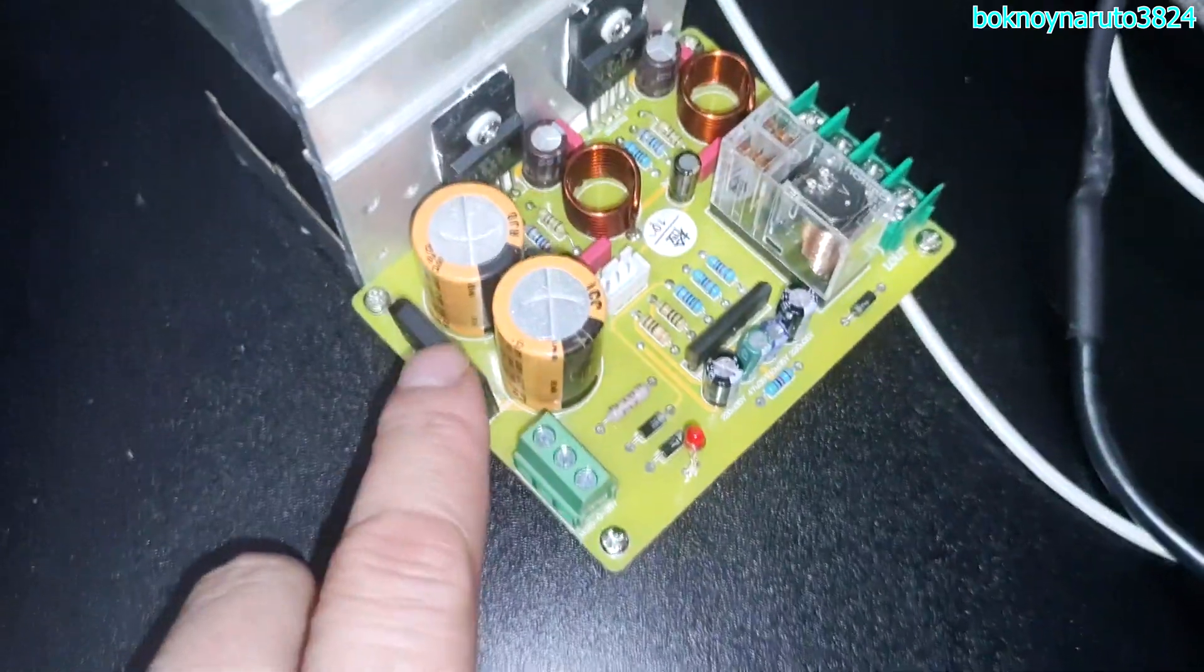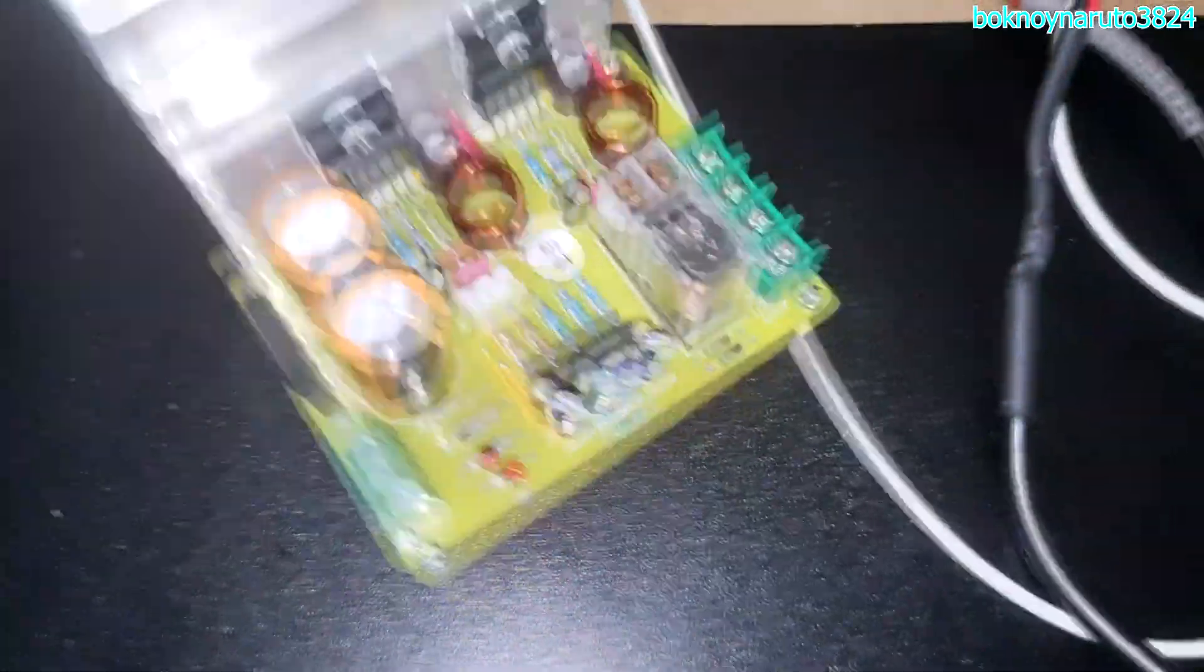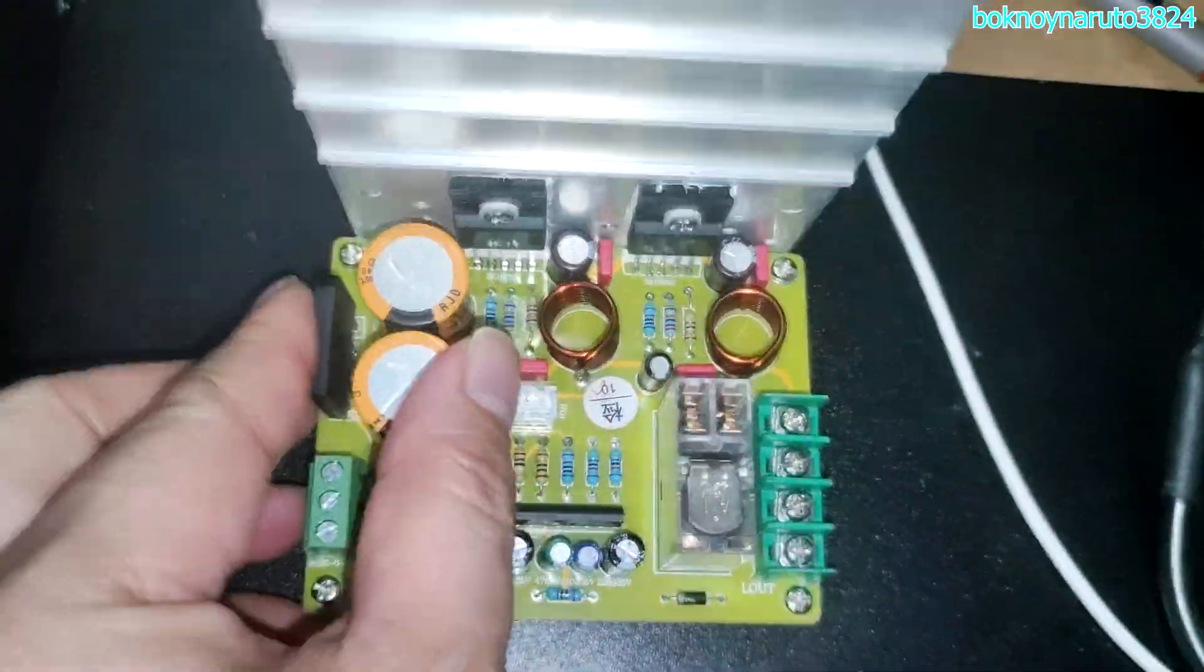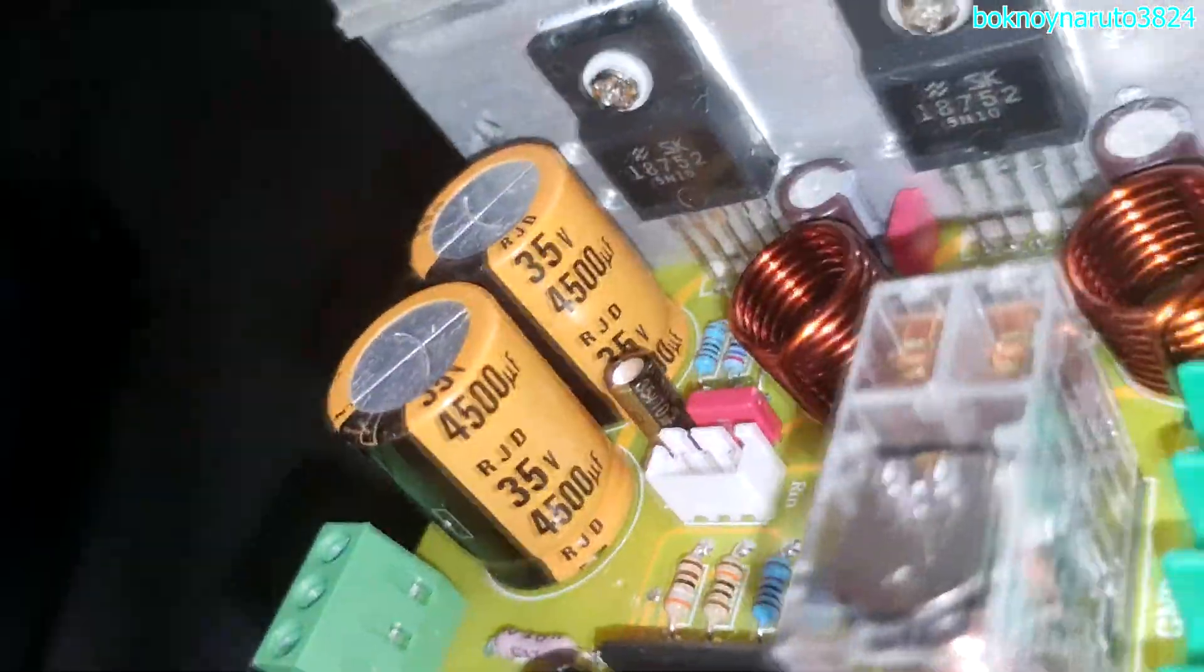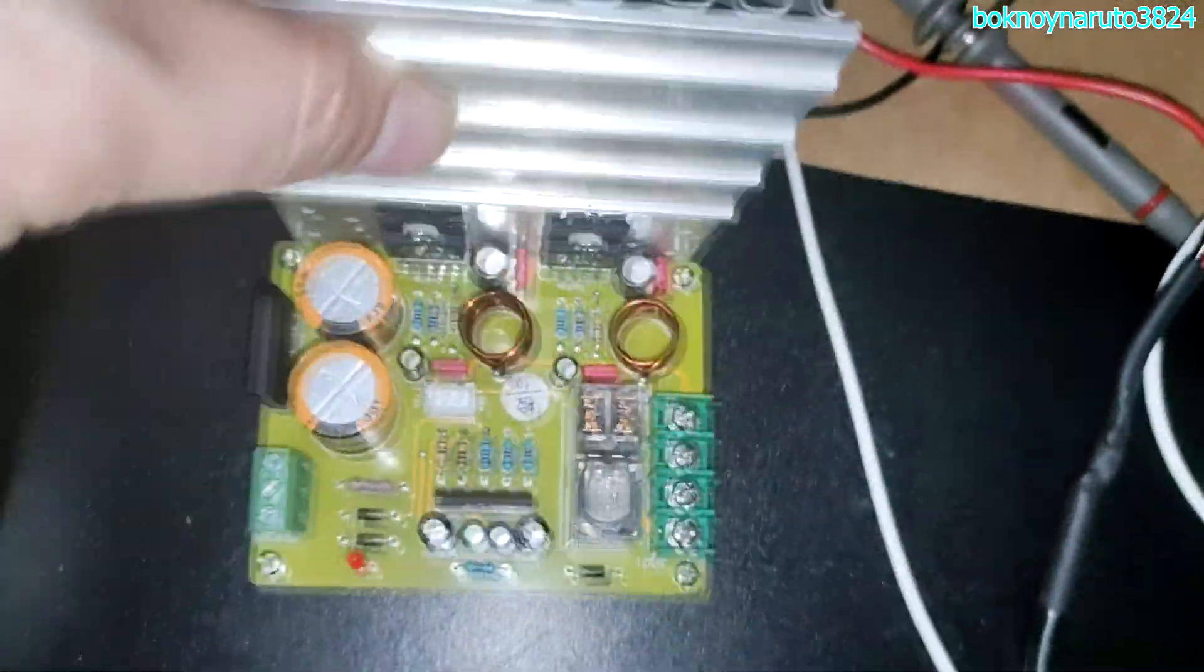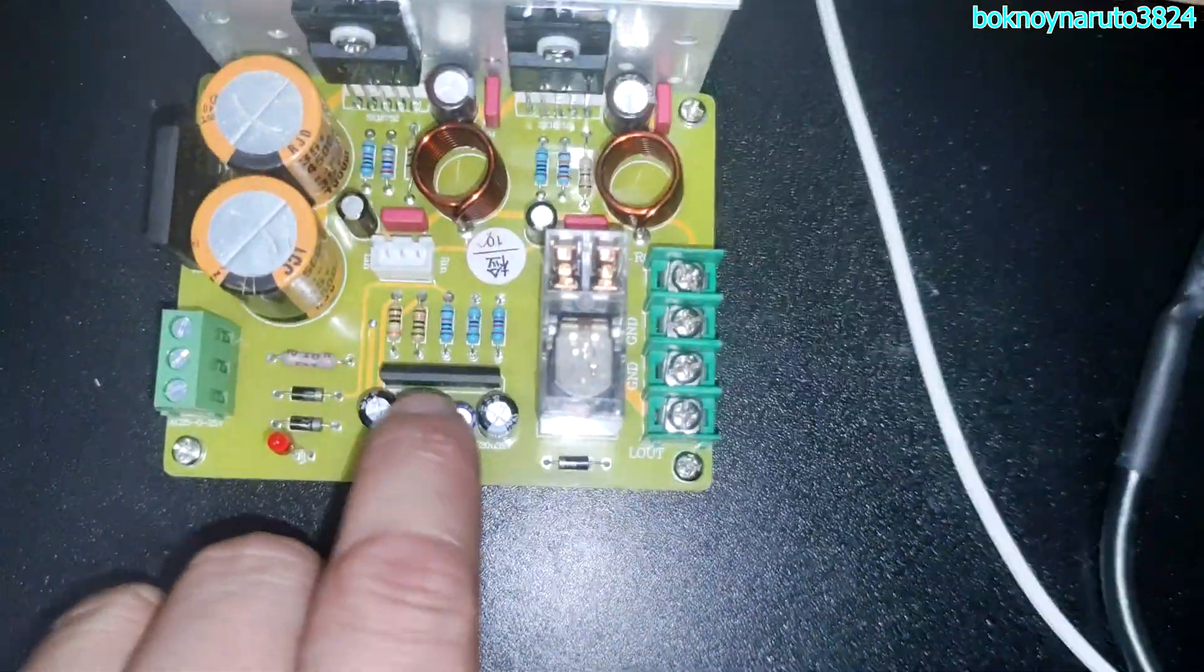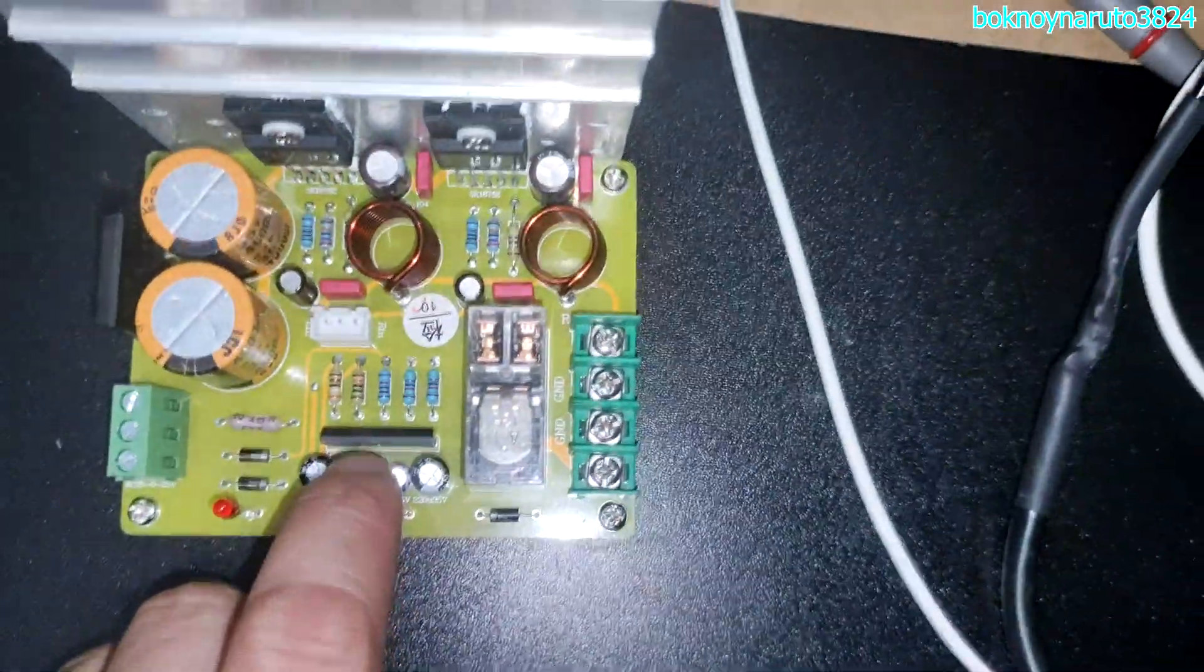So the board has a built-in bridge rectifier here. This board can be connected directly to an AC source, transformer, or toroid. We have our primary capacitor here, 4000µF, 35V. We also have a UPC-1237 here. This is a speaker protection IC.